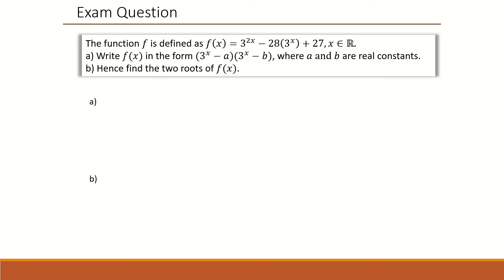This question tests your laws of indices and factorizing skills. So for part a, in my opinion, I would change 3 to the power of x into a letter, which I have gone for x. So I should get x squared minus 28x plus 27. As 3 to the power of 2x is the same as 3x squared, which is the same as x squared. Factorizing to be x minus 27 and x minus 1. Change the x or any other letter back into the 3 to the power of x. And you should have got 3x minus 27 times 3x minus 1.